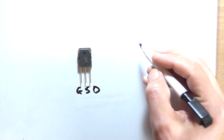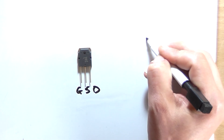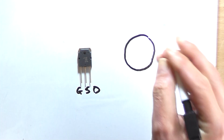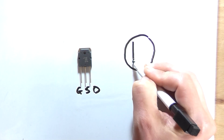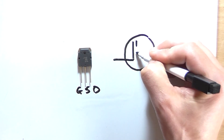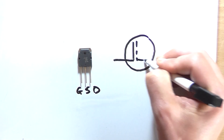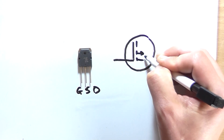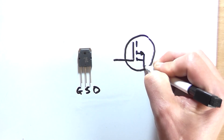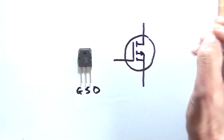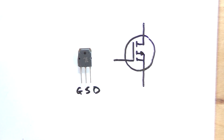So for a P-channel MOSFET like this, its schematic symbol will be represented like this. We have an arrow pointing out going to one pin, and there's the other pin — and that's what it will look like on the schematic.